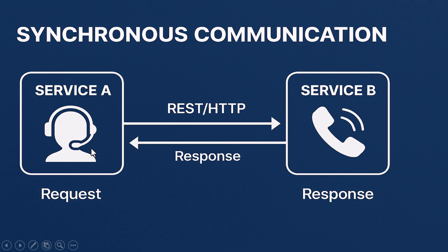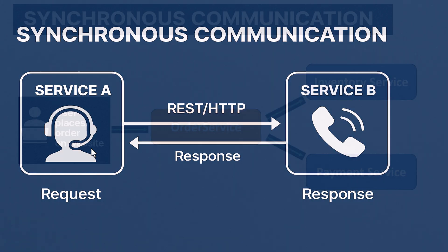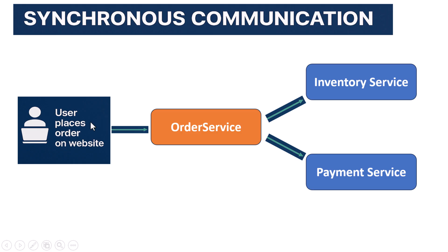So when would this be useful? Let's imagine an e-commerce system. A customer clicks place order. That request hits the order service, but before it can confirm anything, it needs to talk to other services. First, it needs to check with the inventory service to see if the item is in stock. It sends a REST API call to inventory. Inventory processes it and replies — yes, we have five units left. Only then can the order service move to the next step.